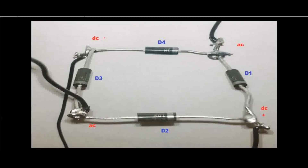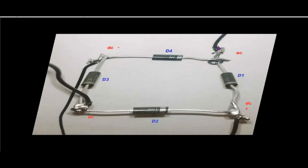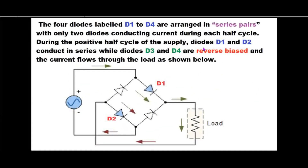Here is an example of how I have connected the diodes to make a bridge rectifier. Note that where D1 and D2 meet — that is, the negative side of diode one and the negative side of diode two — that's where we'll have our DC positive. And where D3 and D4 meet, that's where we'll have our DC negative. Where D4 and D1 meet, that's where we supply our AC, either neutral or live. The four diodes, labeled D1 to D4, are arranged in series pairs, with only two diodes conducting current during each half cycle.